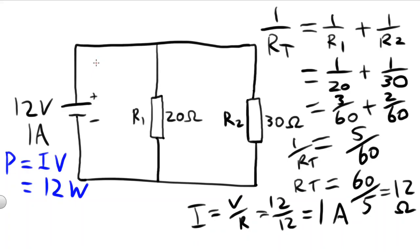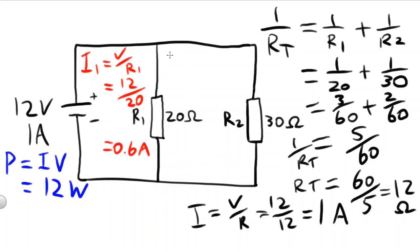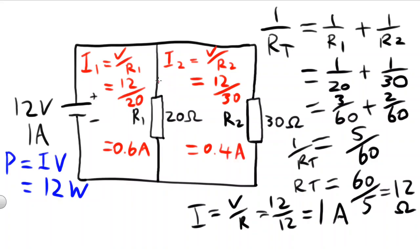For resistors in parallel, the voltage drop across each resistor is the same, so for both R1 and R2, the voltage drop is 12 volts. However, the currents are not the same. For the first resistor, I1 will equal V over R1 — the voltage is 12 divided by the resistance of the first resistor, 20, which will equal 0.6 amps. For I2, V over R2 equals 12 divided by 30, which equals 0.4 amps. It's easier for electricity to pass through the 20-ohm resistor — it has a higher current — than the 30-ohm resistor. Less resistance means more current goes through the first resistor.